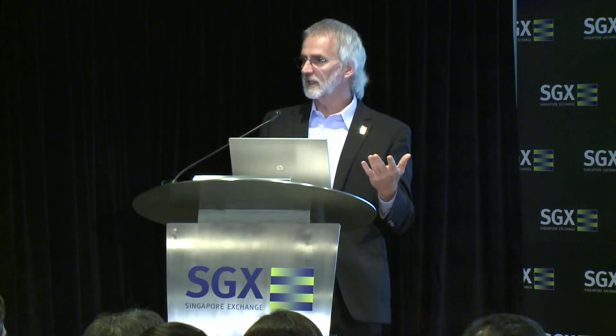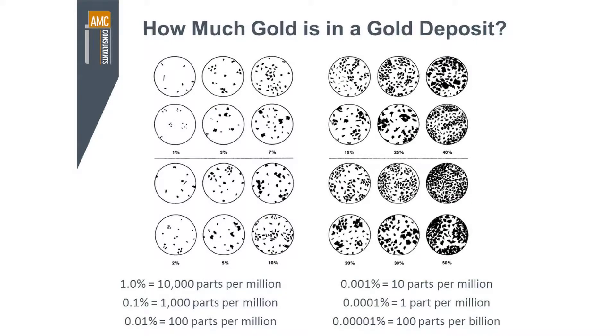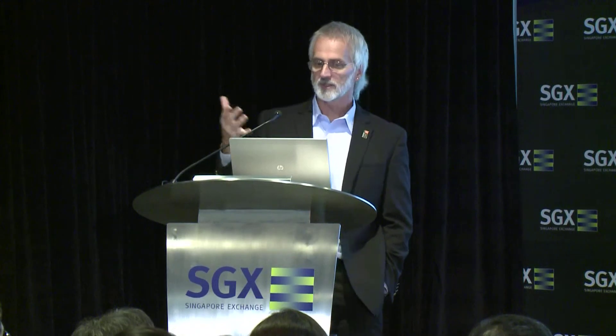We mine many commodities at 1%. Copper is a really good example of a commodity that might be 1% in the rock, and we make good money out of and process. If you had a deposit of gold that is 1%, you'll probably own Singapore, because there are no gold deposits that rich — the average grade would be 10,000 parts per million in that deposit.